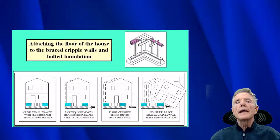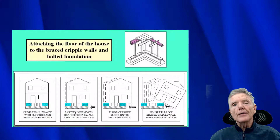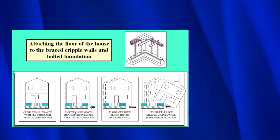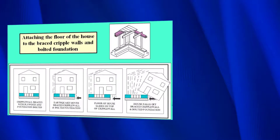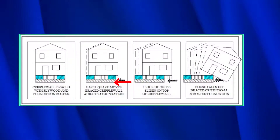Now that we've braced the cripple wall with plywood and bolted it to the foundation, there's one more thing we need to do — we need to make sure the house stays attached to the top of the cripple wall, otherwise it'll slide off. Here you can see the braced and bolted cripple wall: as the earthquake force comes and pushes underneath the house, the house starts to slide on top of the cripple wall and can eventually fall off completely. What we use are pieces of steel, also called connectors, which you'll see photographs of in a moment.